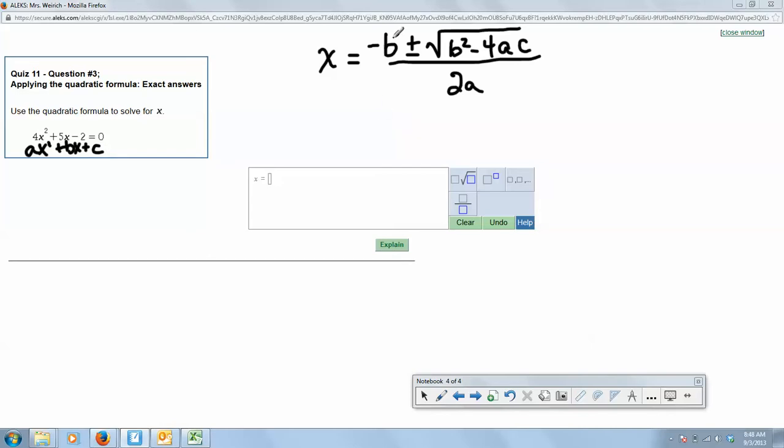Our b in this case is 5, so we would write down minus 5 plus or minus the square root of b squared. Now if I can easily square b in my head, which 5 times 5 is 25, I'm going to go ahead and write down 25, but I would not recommend you do that for the last part because that's where I see students make mistakes.